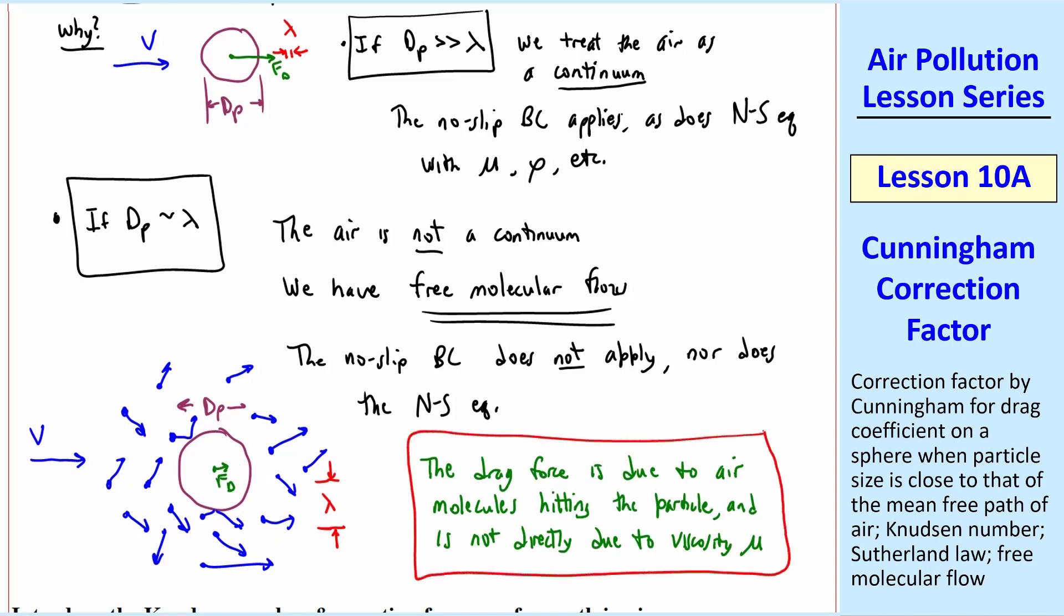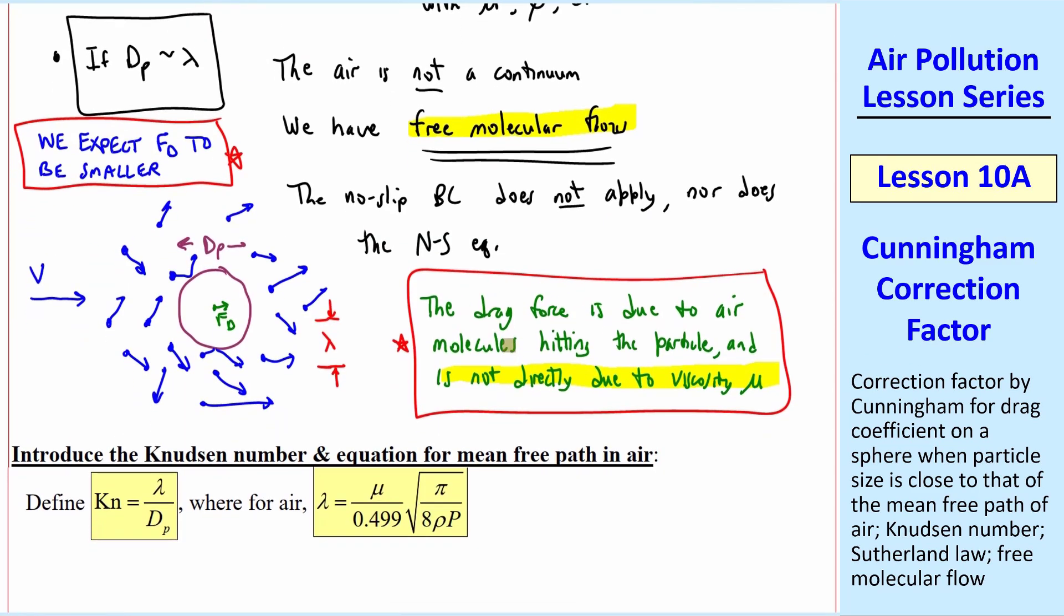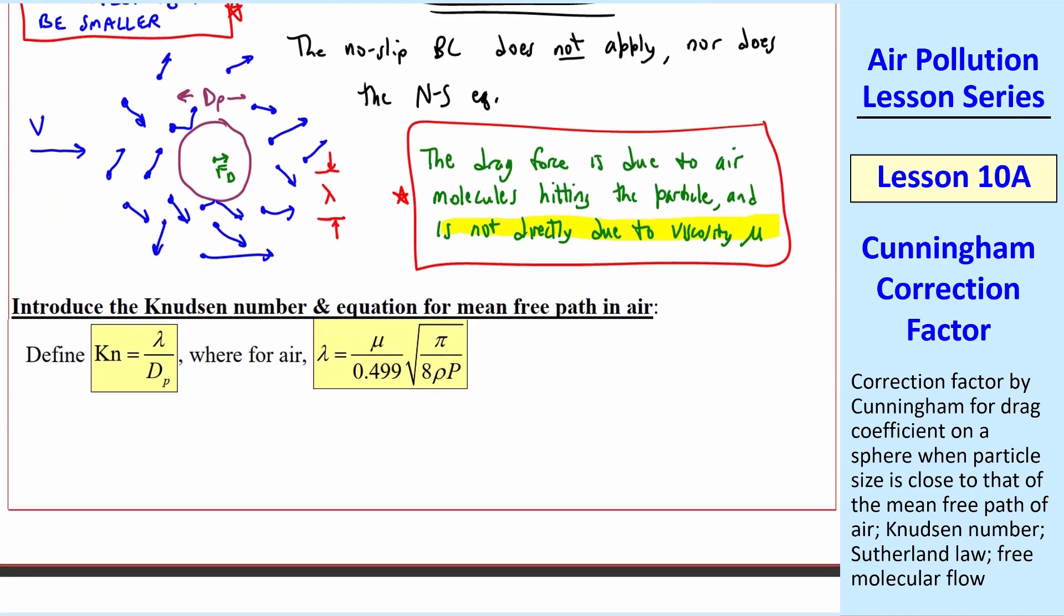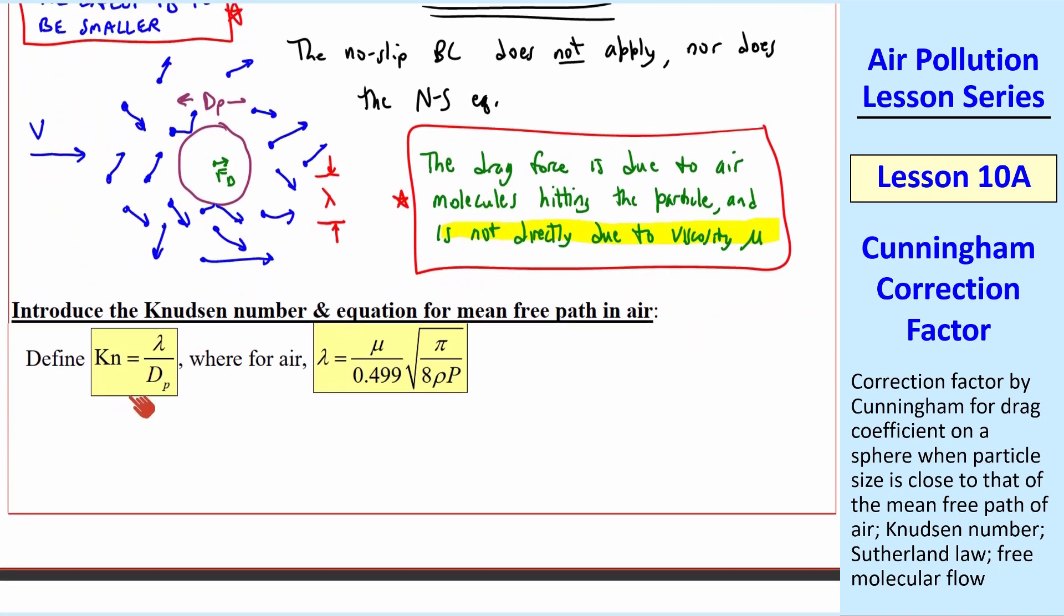For this free molecular flow condition, the drag force is due to air molecules hitting the particle, and is not directly due to viscosity mu. And we expect fd to be smaller, for the same particle size and same average speed. For free molecular flow, we need to correct for these free molecular effects. This is where we introduce something called the Knudsen number, which we define here as the ratio of mean free path to particle diameter. The Knudsen number is a non-dimensional parameter just like Reynolds number.